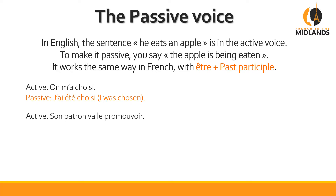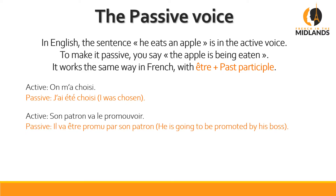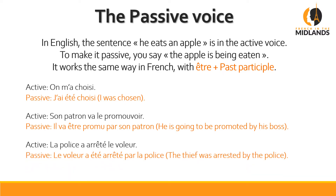Active form: 'Son patron va le promouvoir.' Passive: 'Il va être promu par son patron' — he is going to be promoted by his boss. Active form: 'La police a arrêté le voleur.' Passive form: 'Le voleur a été arrêté par la police.' Notice that we say 'être has been arrested' because that's our past tense in French — the passé composé.